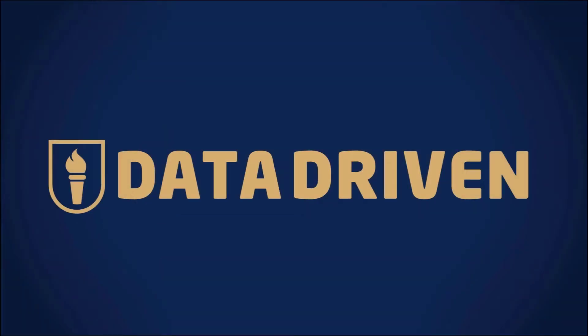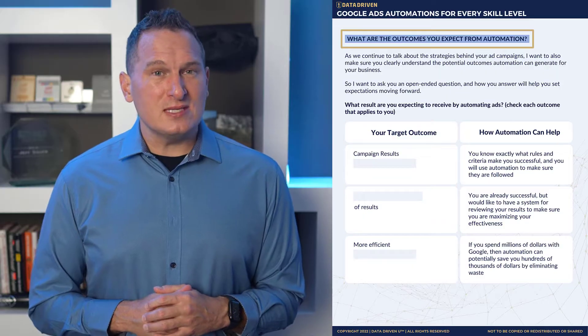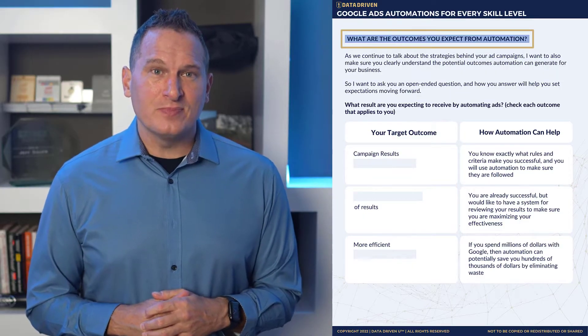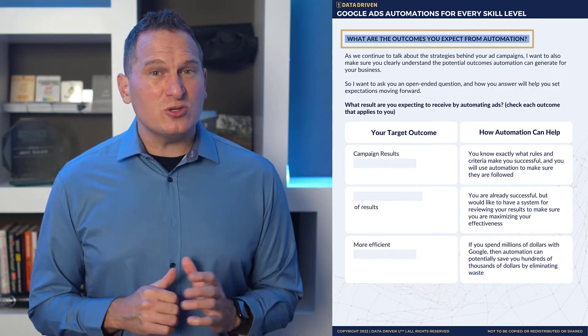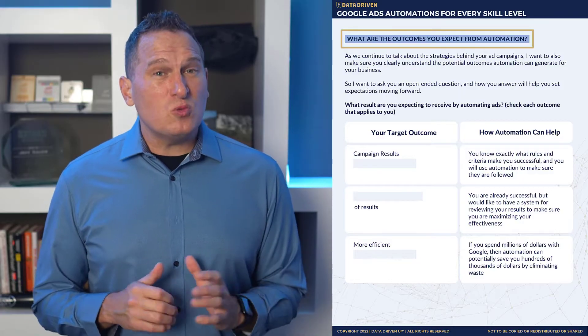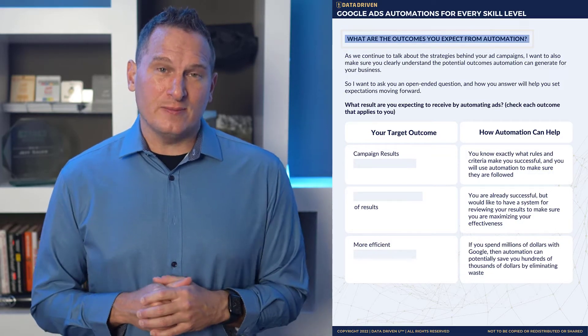Once you decide on a PPC strategy, I want to make sure you clearly understand the potential outcomes that automation can generate for your business. I'm going to ask you an open-ended question, and how you answer this will help set expectations moving forward. Here's the question: what results are you expecting to receive by automating your ads? I'm going to list five potential target outcomes, and if at least one of these resonates with you, then I can recommend that you consider automation.